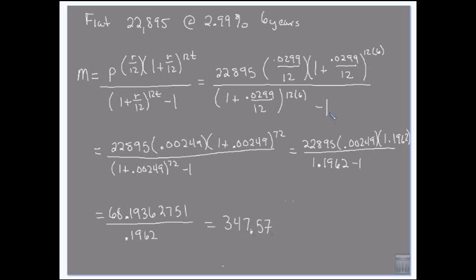So if you had excellent credit right now, today, and you went to Wells Fargo and financed a brand new Fiat for $22,895, and you got that 2.99% interest rate over the next six years, your car payment would be $347.57.